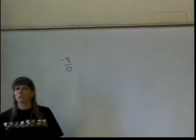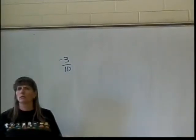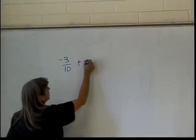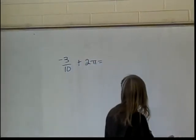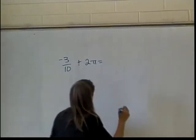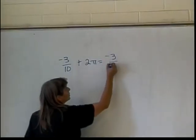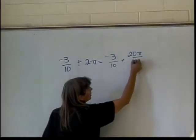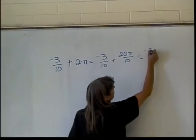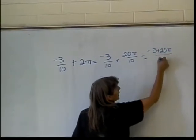You got a minus. I mean add 2 pi. I got to add 2 pi. Right, it should be 20 over 10, right? 20 pi over 10, right? Okay, so we have negative 3 over 10 plus 20 pi over 10, which would be negative 3 plus 20 pi over 10.